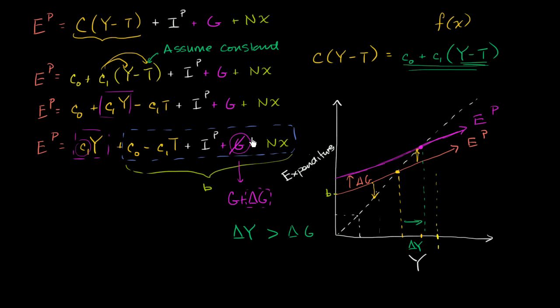They just haven't been Keynesian by manipulating the government spending variable. For example, when people talk about expanding the economy by lowering taxes, they are being Keynesian when they say that. Because if we go back to our original planned expenditure function with just G, based on this model, it can also be shifted up by lowering taxes.